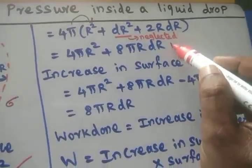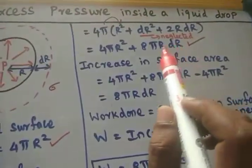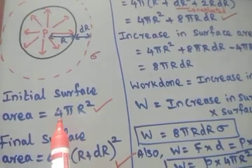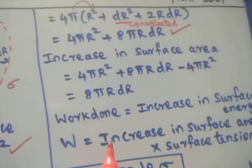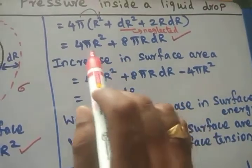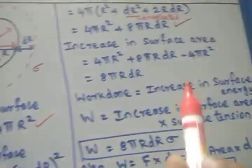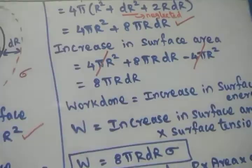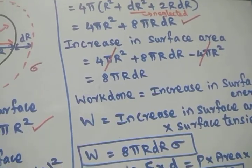So the final surface area is 4 pi R squared plus 8 pi R dr. The initial surface area is 4 pi R squared. The increase in surface area is final minus initial: the 4 pi R squared terms cancel, and we get 8 pi R dr as the excess surface area.